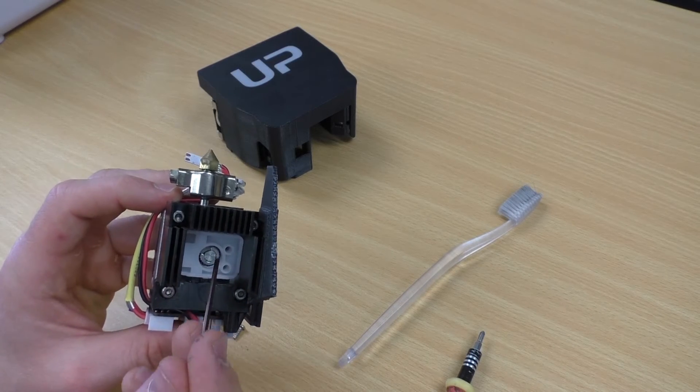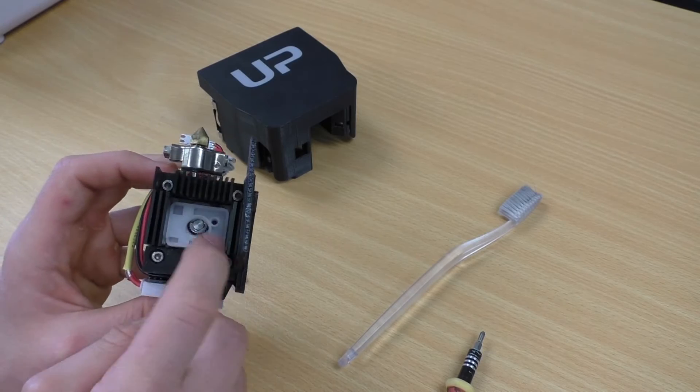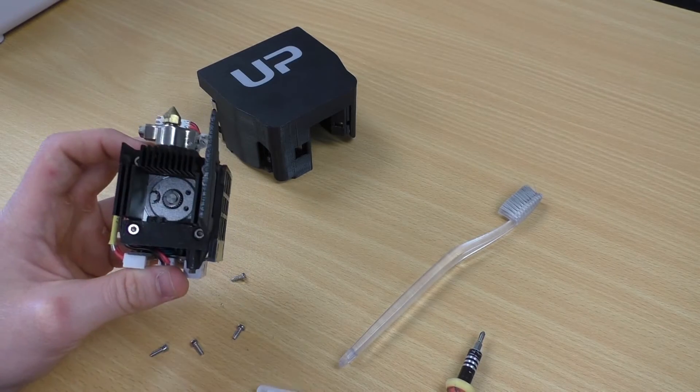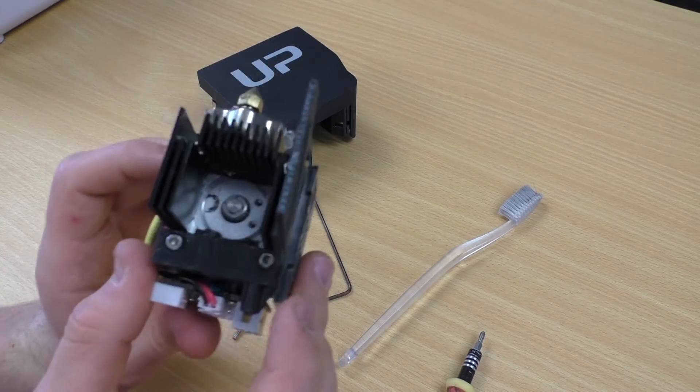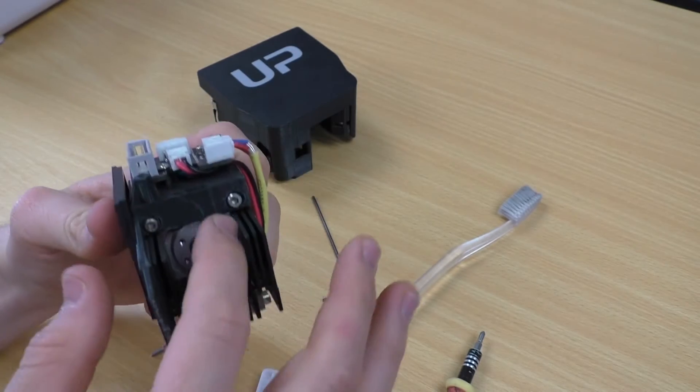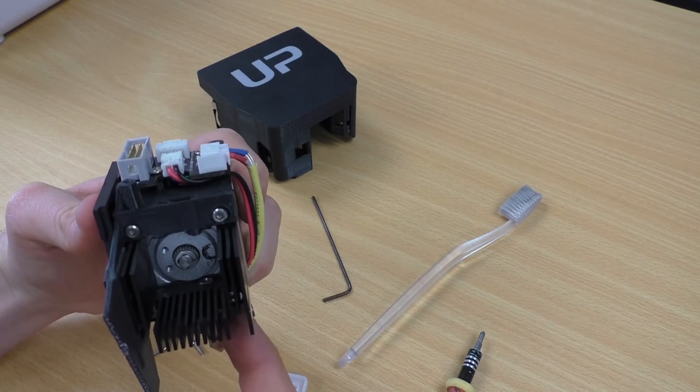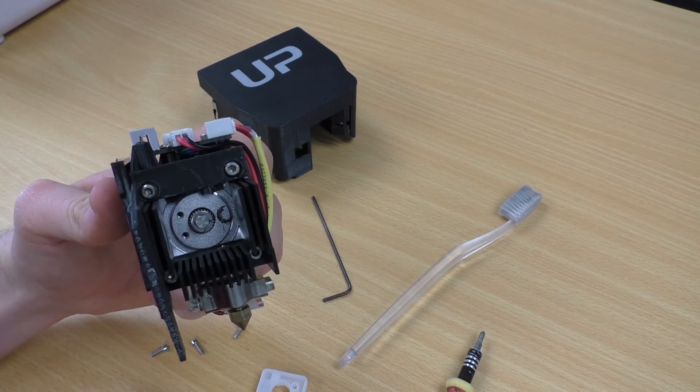Now once you remove those two allen keys we need to take off this white cap. So I usually use my allen key as a lever to pop it out. And then underneath we can see the drive gear that pulls the filament through. So the filament is inserted here, comes down past the drive gear and then goes down into our extruder assembly or our extruder block.